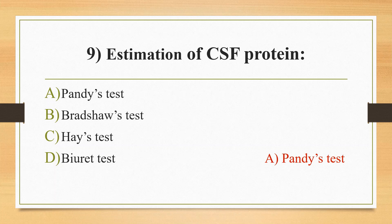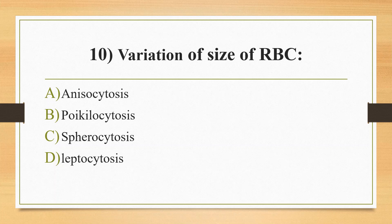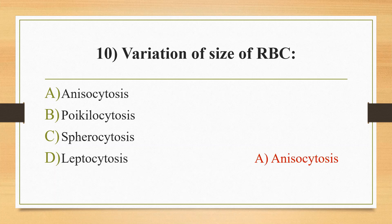Tenth question: variation of size of RBC — option A anisocytosis, option B poikilocytosis, option C spherocytosis, option D leptocytosis. The answer is option A, anisocytosis. Variation of shape of RBC is poikilocytosis. Spherocytosis is seen in inherited hemolytic anemia due to a defect in the erythrocyte membrane. Leptocytosis is a main characteristic of iron deficiency anemia and thalassemia; in leptocytosis, RBCs are thinner than normal and contain less hemoglobin.